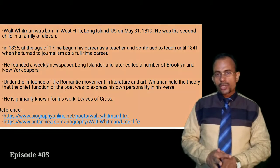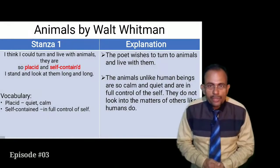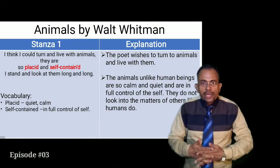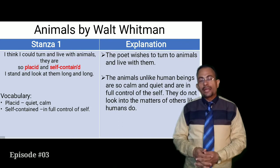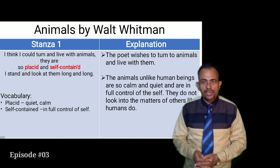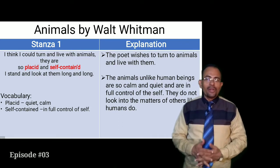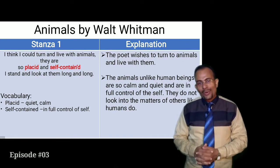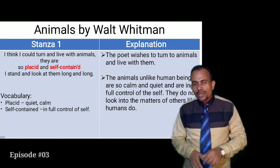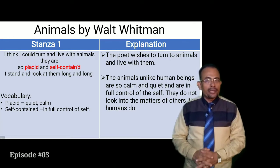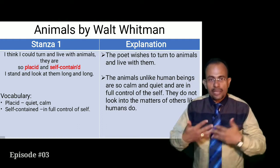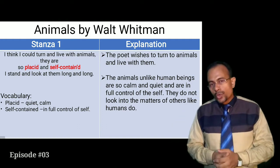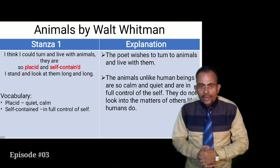Now let's look at the stanza-wise explanation. First stanza: 'I think I could turn and live with animals, they are so placid and self-contained. I stand and look at them long and long.' Here, 'placid' refers to quiet and calm, and 'self-contained' means in full control of the self.